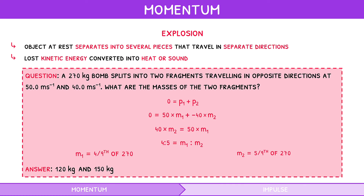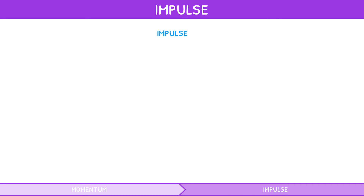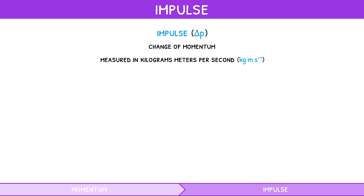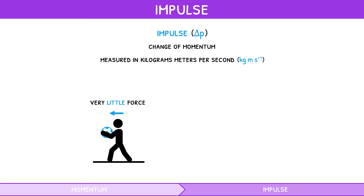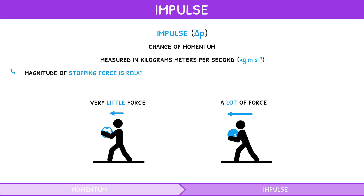Now that you know the scenarios where the law of conservation of momentum applies, how does this relate to mechanics? Momentum is related to force via impulse. Impulse, denoted as delta p, is defined as the change in momentum, also measured in kg·m/s. If your friend throws you the football, it takes very little force to change the football's lower momentum to 0, whereas it takes a lot of force to change the bowling ball's higher momentum to 0. So the magnitude of the stopping force is related to the magnitude of the change in momentum, and also to the time it takes to stop the object.